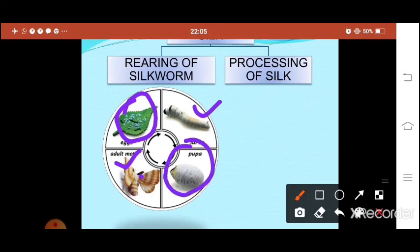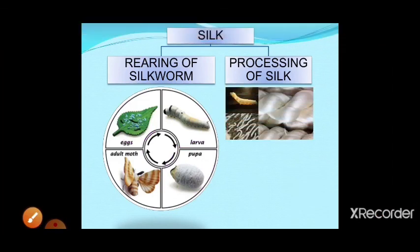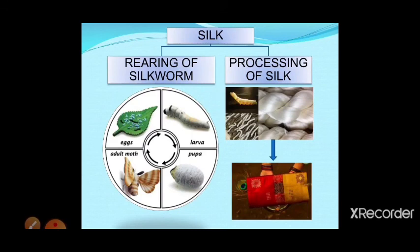The cocoon is nothing but a cover made of silk thread. After the cocoon matures, we begin the processing of silk. We collect the cocoons, boil them, and extract the silk thread. From the silk thread we prepare silk fabric — clothes like sarees, shirts, and dhotis. These are the two main stages: rearing of silkworm and processing of silk.